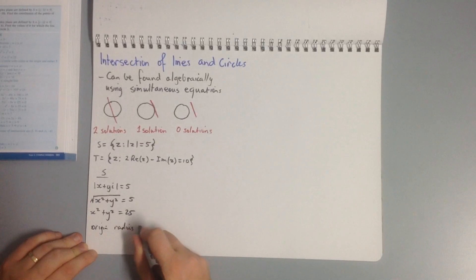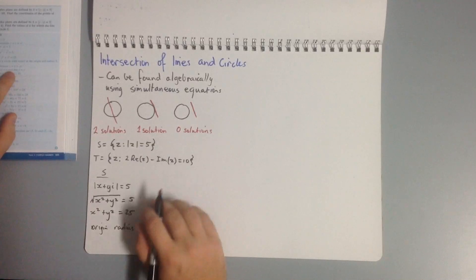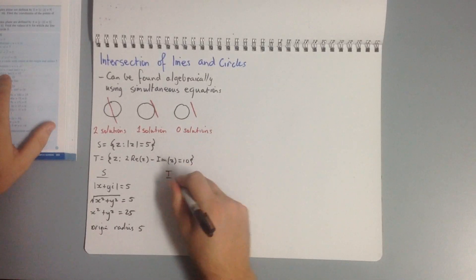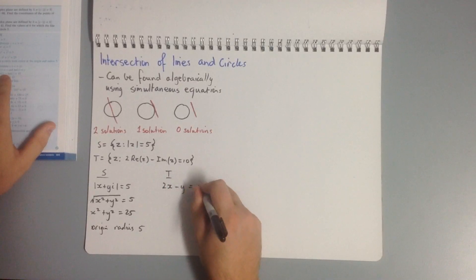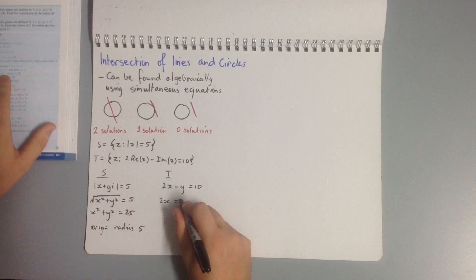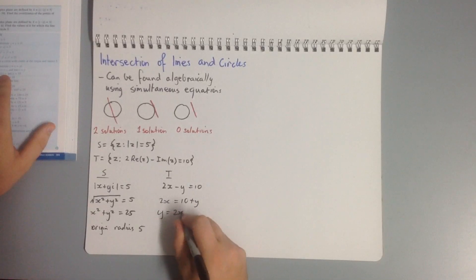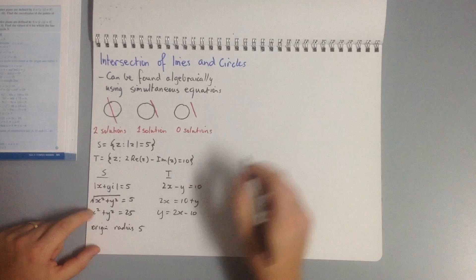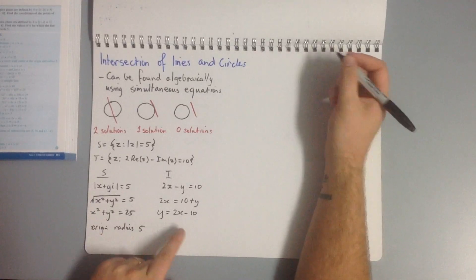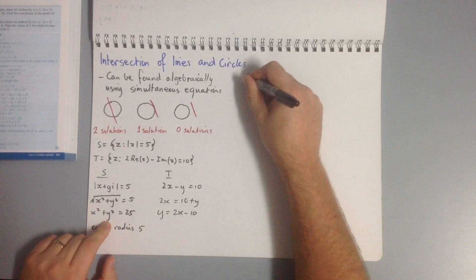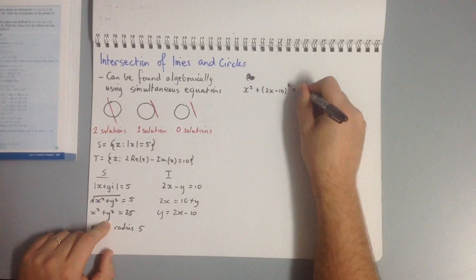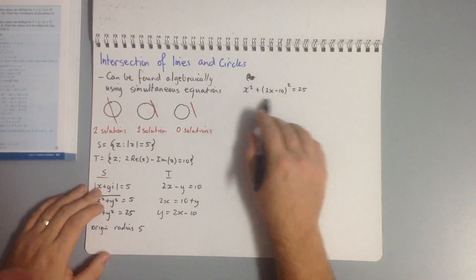For T: the real part is x and imaginary part is y, giving 2x minus y equals 10, which rearranges to y equals 2x minus 10. We now have two equations to solve simultaneously. Substituting y equals 2x minus 10 into the circle equation: x squared plus (2x minus 10) squared equals 25.